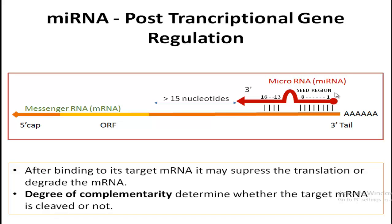In micro RNA there is a specific region called the seed region, which is important. The complementarity of the seed region determines whether the target mRNA is cleaved or not. If there is a higher degree of complementarity, the target mRNA is cleaved — that is, degraded — meaning no remnants are present in the cell. But if the complementarity is less, the target mRNA is not degraded but protein synthesis is stopped; the messenger RNA is still present in the cytoplasm of the cell.